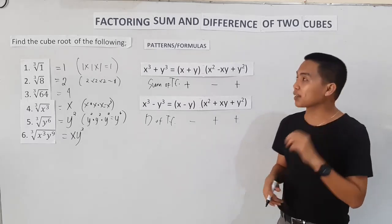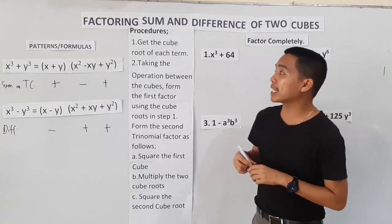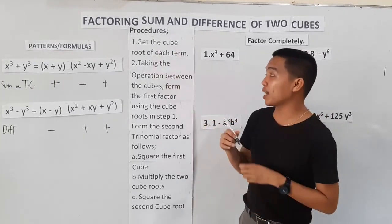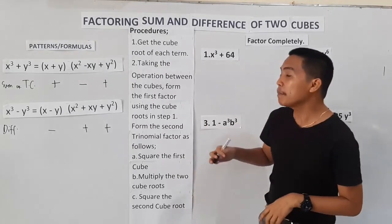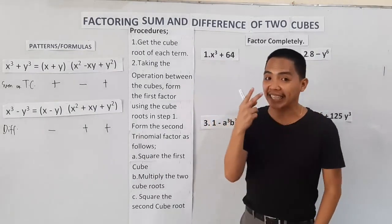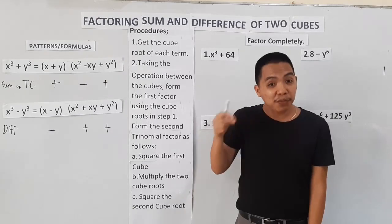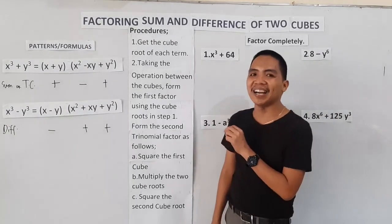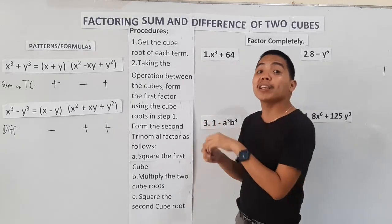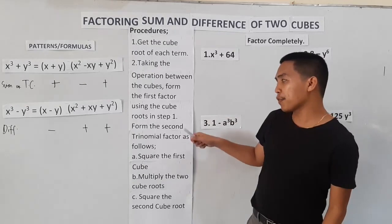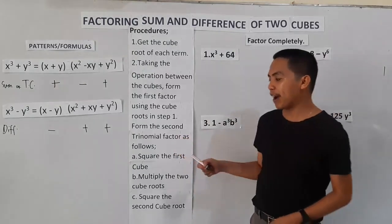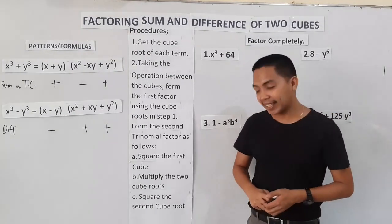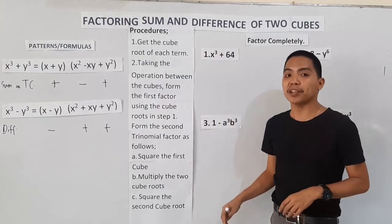Let's proceed now with factoring. We have here the procedures or steps on how to factor this type of polynomial. First, get the cube root of each term. Second, taking the operation between the cubes — meaning follow the operations as given — form the first factor using the cube roots from step one. Then form the second trinomial factor: square the first cube root, multiply the two cube roots, then square the second cube root.